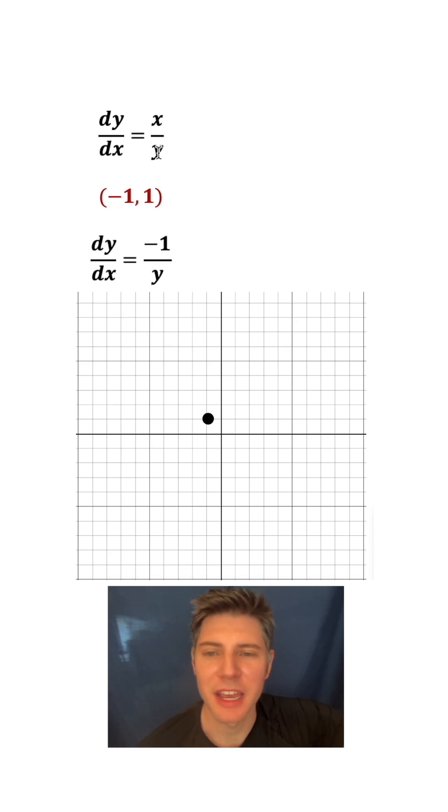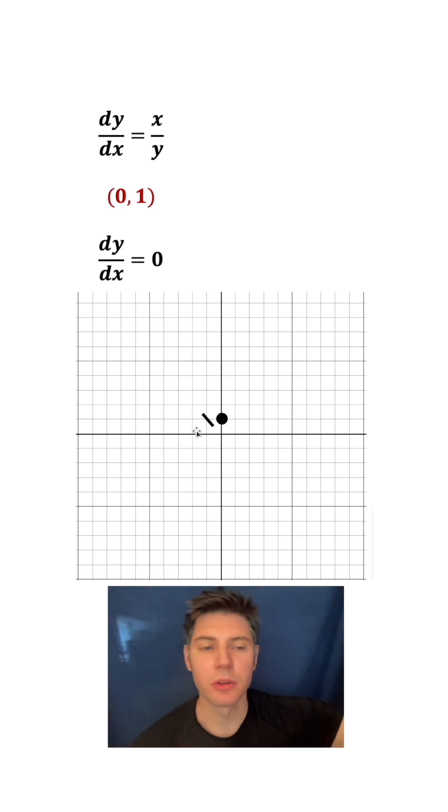...we plug in -1 for x, plug in 1 for y, simplify it, and then we put that slope right here on this point. The slope is -1, so I drew a little line here to represent -1. We can do the same thing for this point, which is (0, 1). Take our differential equation, plug in 0 for x and 1 for y, and we get 0, so we need something with a 0 slope, which is a horizontal line.